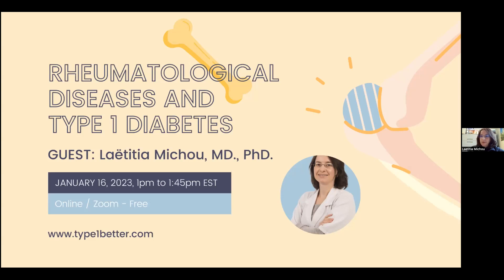I've been there for 15 years now, and I am also a clinical scientist working on genetic predisposition of rheumatic conditions, such as bone diseases like Paget's disease and osteoporosis. I also study rheumatoid arthritis and Dupuytren's disease. Today, I will present an overview of the main rheumatological conditions associated with type 1 diabetes.